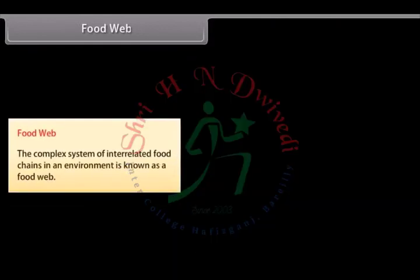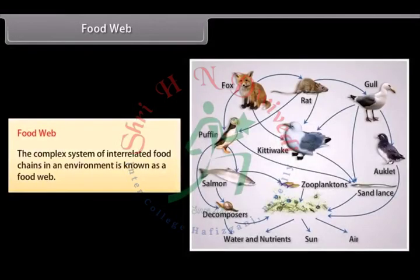The complex system of interrelated food chains in an environment is known as a food web.